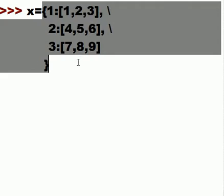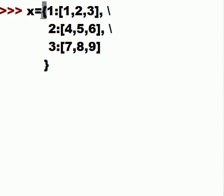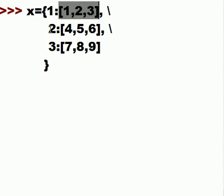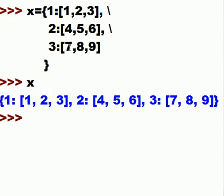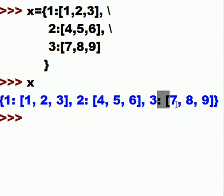I close the curly braces to complete the dictionary. Inside I have three key-value pairs. Let's verify it works by printing x — and there it is: key-value, key-value, key-value.